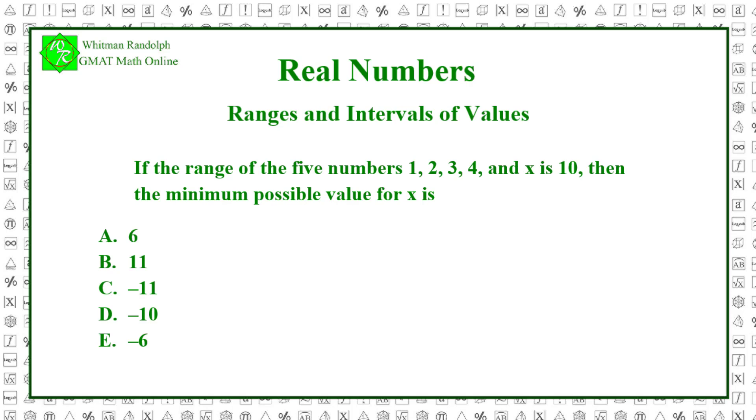The range is the difference between the smallest and the largest numbers. In this case, we want to know the minimum possible value for x to make the range 10. We are tempted to say 11 because all the numbers listed are positive, so we're thinking in terms of positive numbers, and 11 minus 1 equals 10.